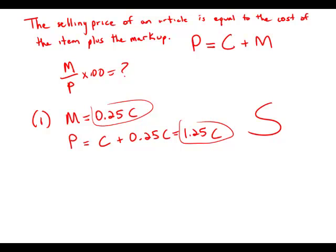Now forget statement number one — this is a tricky one. We get a lot of information in statement one and we have to completely forget it to consider statement two by itself. Statement two alone tells us that the selling price of the TV is $250. But we don't know anything about the cost or the markup, so we're not able to figure out any ratios just from the fact that the price is $250. This statement by itself is insufficient.